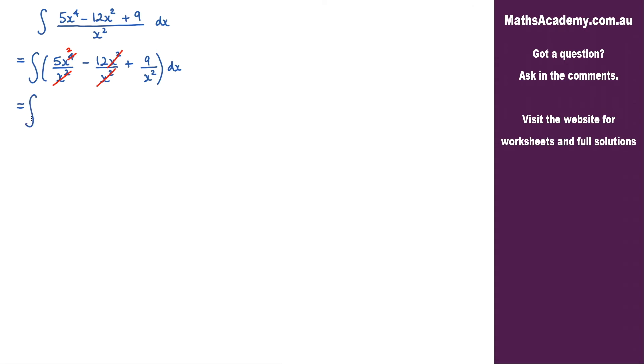We've got the integral of 5x squared minus 12 plus 9x to the minus 2, that is all with respect to x. So now I can go ahead and start the integration process.